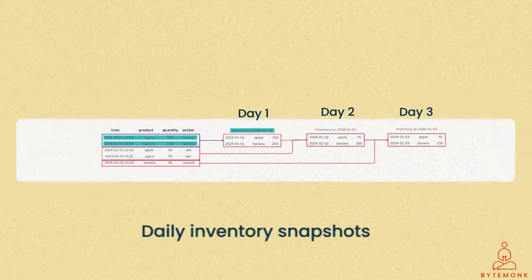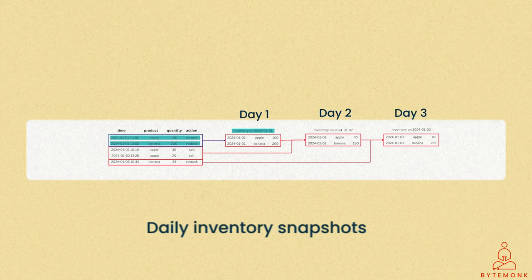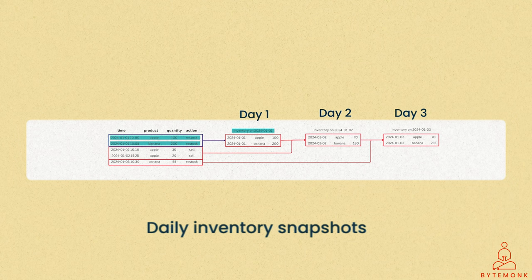Similarly, on day 3, we obtain the result by combining the inventory from day 2 with the delta events from day 3. This method significantly boosts efficiency by producing a daily inventory snapshot, thereby reducing the data size for each job. We can further minimize the data size by generating hourly snapshots and so on.